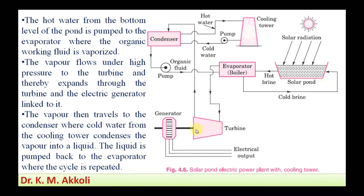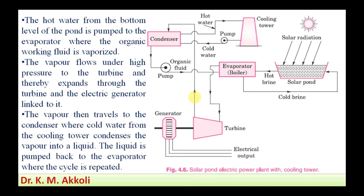The condensed organic fluid is pumped back to the evaporator, where it is evaporated again by receiving heat from the hot brine, and the cycle continues. The turbine shaft mechanical energy is connected to an electrical generator, which generates electricity. In the solar pond power plant, solar radiation is converted to heat stored in the water, which evaporates a secondary fluid whose vapor expands in a turbine to generate electricity.